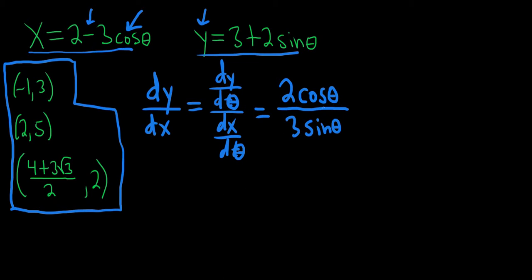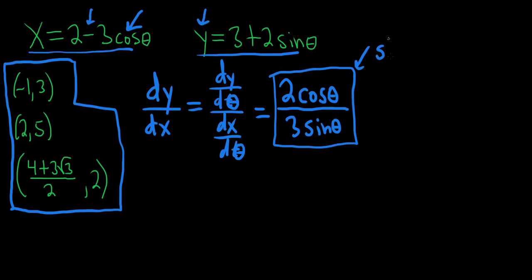We could simplify this as cotangent, but it might be easier to work with it in this form. So we'll leave dy/dx as 2cosθ over 3sinθ. This formula will give us the slope at any angle θ.